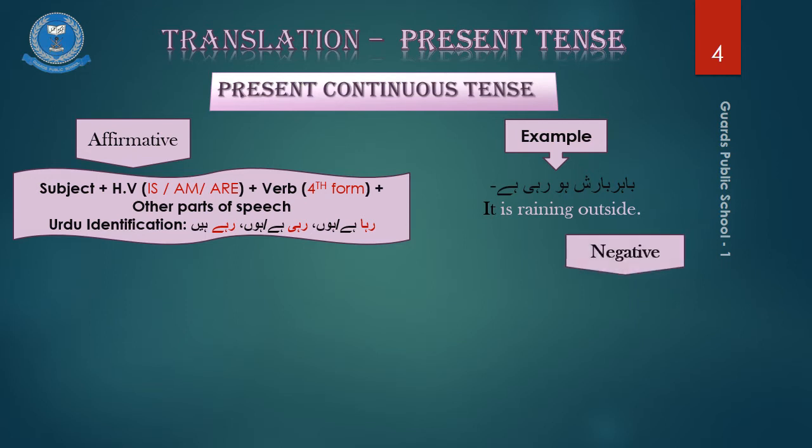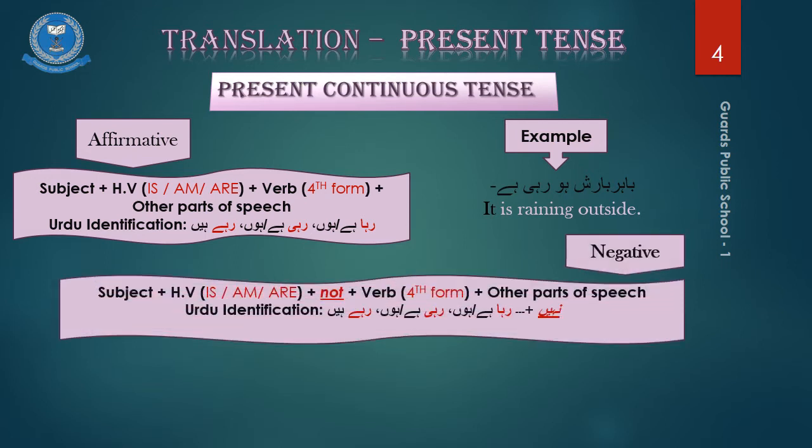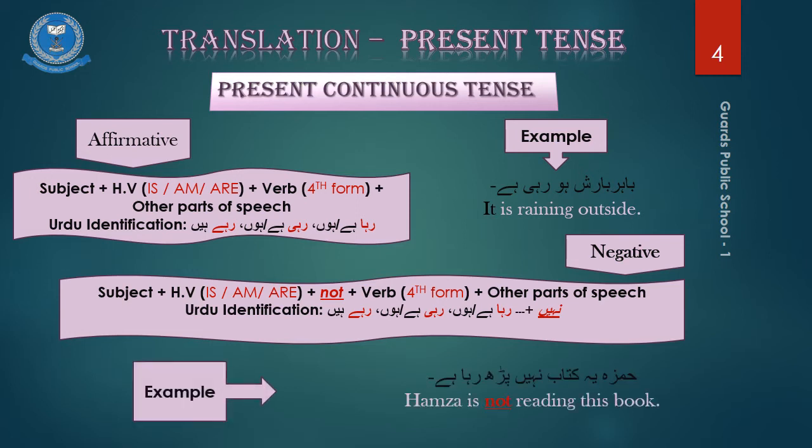Similarly, the negative form of this aspect in an Urdu sentence will have the same identifiers and the word of negation nahi in it. For example, hamsah yeh kitab nahi par raha hai. Hamsah is not reading this book.